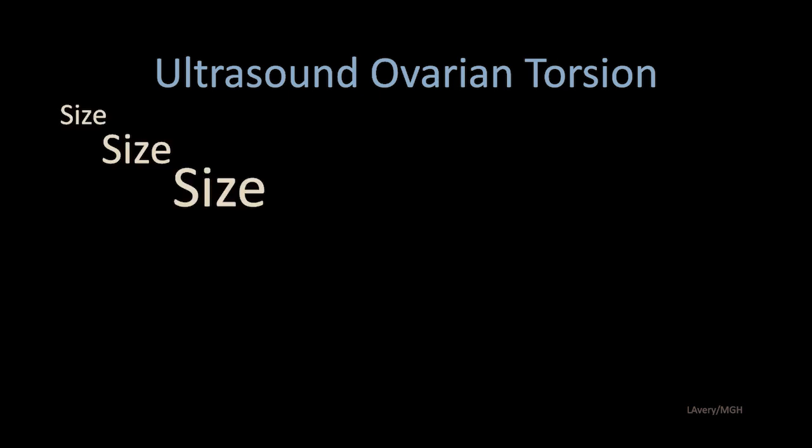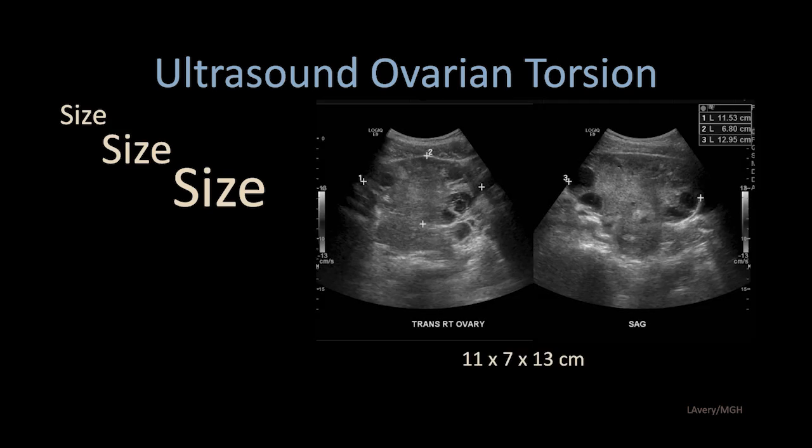Let's discuss the ultrasound findings of ovarian torsion. Size is very important in evaluating for ovarian torsion. Here we see an extremely enlarged edematous ovary measuring 11 by 7 by 13 centimeters — volumetrically, that is enormous. Any ovary over 4 centimeters should be considered as possibly torsed, especially if asymmetric from the contralateral side.